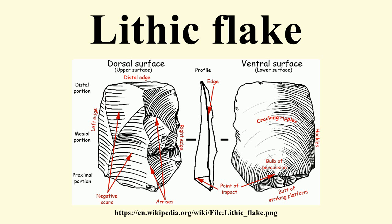Tertiary flakes lack cortex, having derived entirely from the interior of the core. Primary and secondary flakes are usually associated with the initial stages of lithic reduction, while tertiary flakes are more likely to be associated with retouching and bifacial reduction activities.